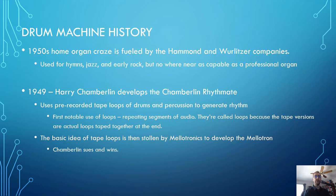In 1949, Harry Chamberlain developed the Chamberlain Rhythmate. This is the first device that uses pre-recorded tape loops of drums and percussion to generate rhythm. You would literally have a spool of tape where the ends are spliced together to create a never-ending loop, just repeating the segment of audio over and over. Every time it was told to play a specific rhythm, it would just start playing that loop. You could adjust the speed, and that was about it.